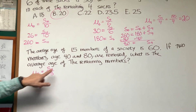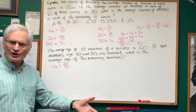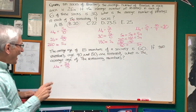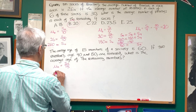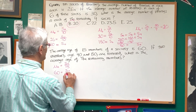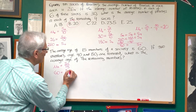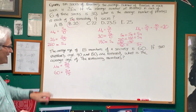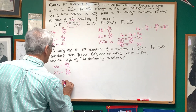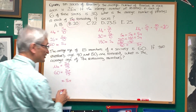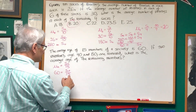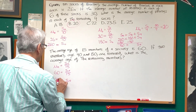The definition of average is the sum of all the scores in the data set divided by the number of scores. The average age is 60. What is the sum of all the ages of the 15 people in the society? It's going to be that sum divided by 15. The sum of the ages of all 15 members is 60 times 15, or 900.